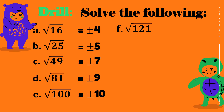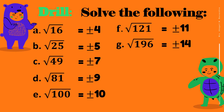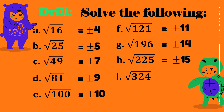How about the square root of 121? It is positive or negative 11. Next, we have the square root of 196. The answer is positive or negative 14. How about the square root of 225? It is positive or negative 15.